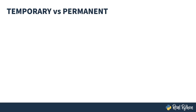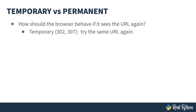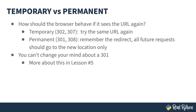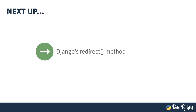This is an important distinction. There's both temporary and permanent redirects. In the case of temporary redirects, the browser should not store this information — every time the original URL is hit, the browser should attempt to go to that URL. For permanent redirects, the browser is meant to remember the redirection, and subsequent typing in of the original URL should automatically go to the redirected URL. This means you can't change your mind about a 301 — I'll talk more about this in Lesson 5. That's the basics of HTTP redirect. Next up, I'll talk about Django's shortcut redirect method.